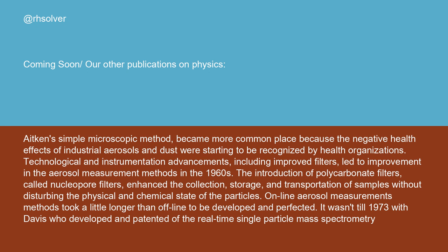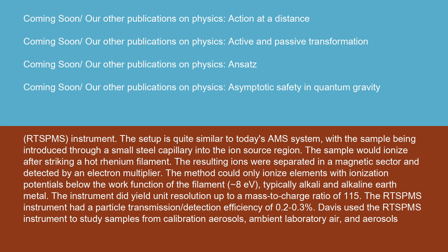Online aerosol measurement methods took a little longer than offline to be developed and perfected. It wasn't until 1973, with Davis, who developed and patented the real-time single particle mass spectrometry RTSB-MS instrument. The setup is quite similar to today's AMS system, with the sample being introduced through a small steel capillary into the ion source region. The sample would ionize after striking a hot rhenium filament. The resulting ions were separated in a magnetic sector and detected by an electron multiplier. The method could only ionize elements with ionization potentials below the work function of the filament, typically alkali and alkaline earth metals. The instrument did yield unit resolution up to a mass-to-charge ratio of 115.